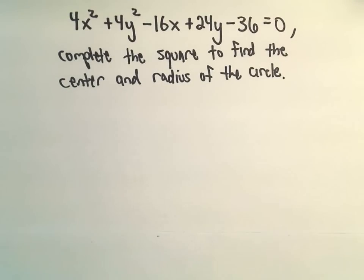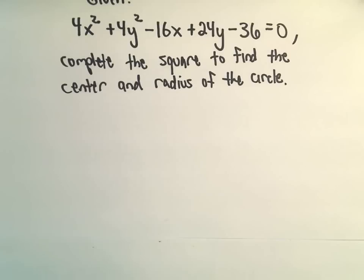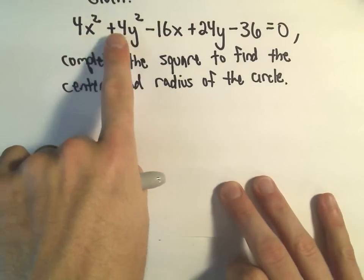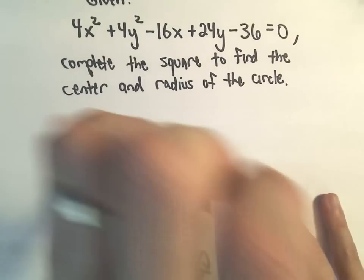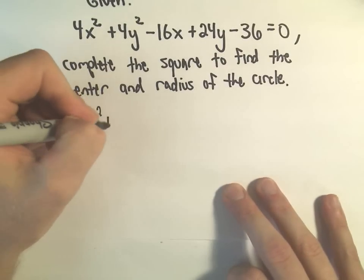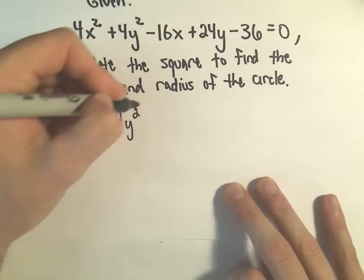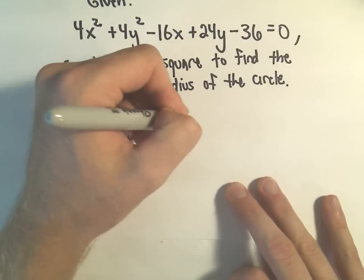So we're going to start with 4x squared plus 4y squared minus 16x plus 24y minus 36. The first thing I'm going to do, just to make the numbers all a little more manageable, kind of one observation. They're all even, so certainly I can divide them by 2, but I think we can even do better than that because I believe 4 will go into all of these numbers.